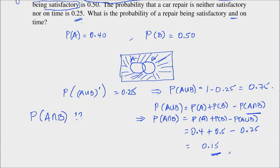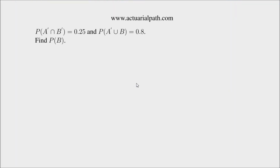Let's do one more example, a little bit trickier than this one. This example is similar to one of the problems assigned as an exercise. We are given the probability of A complement intersection B complement to be 0.25, and the probability of A complement union B to be 0.8. The question is to find the probability of B. I want you to look at these events on a Venn diagram, and I'm going to start with the inclusion-exclusion principle from lecture 3.